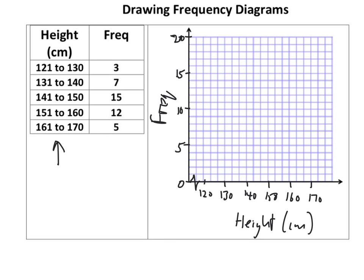If I do a frequency diagram, it goes there. Then we've got 7 for the next one, so 7 goes there.